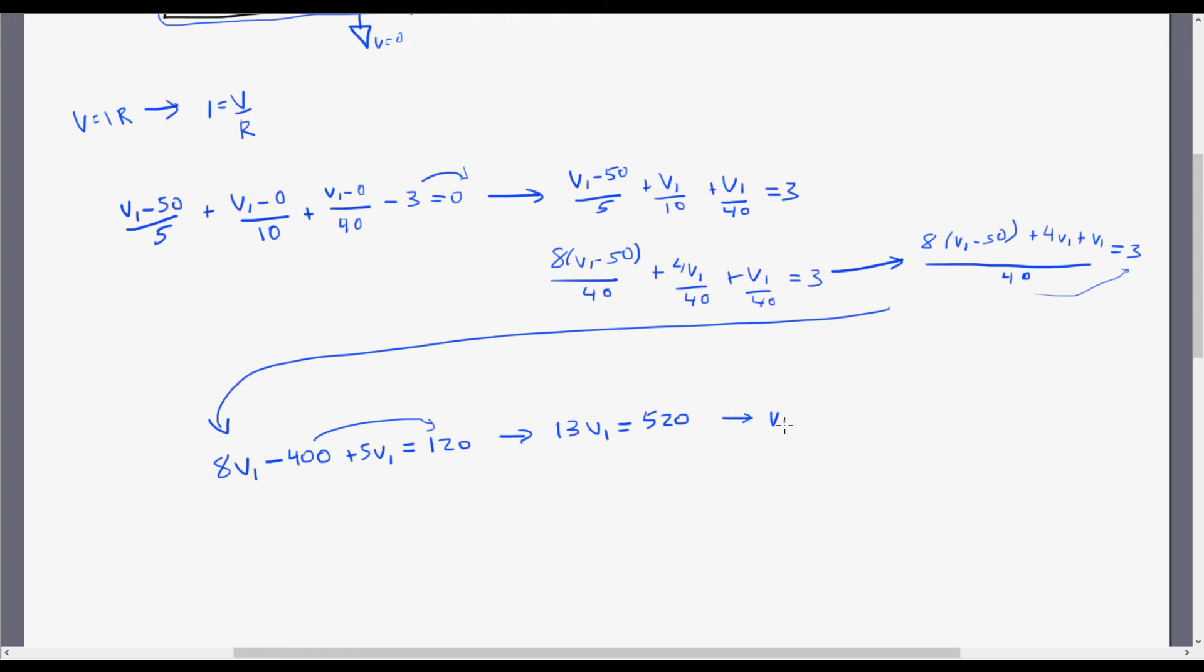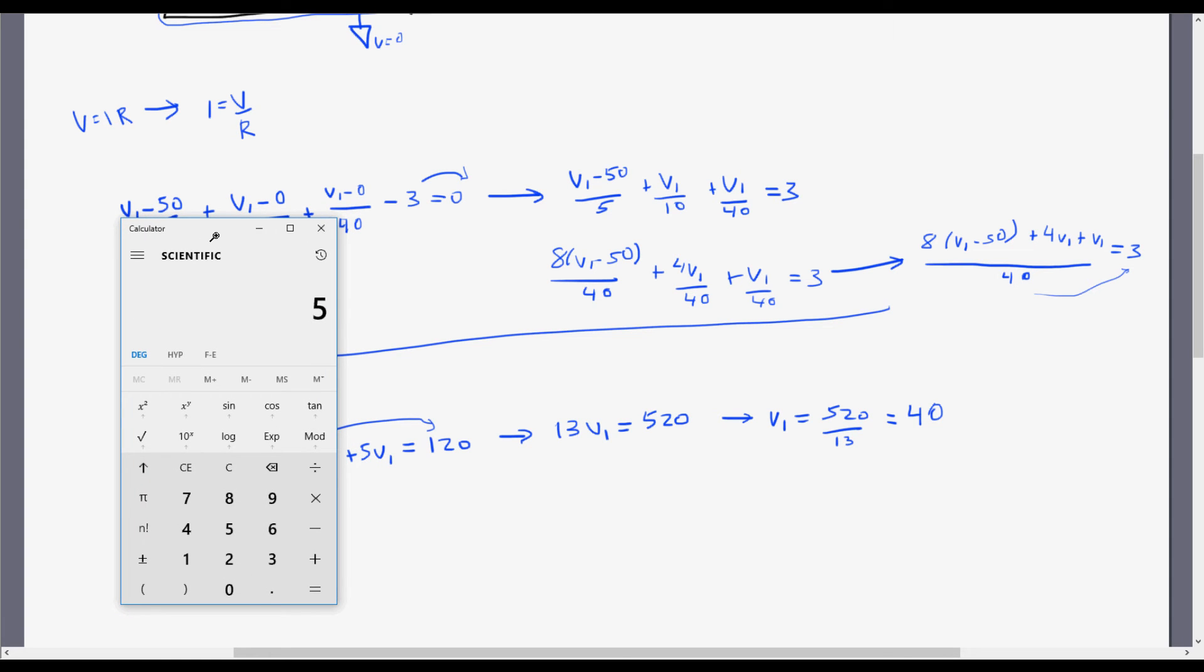V1 is equal to 520 divided by 13, which is also equal to 40, I believe. Just double checking my math here. 520 divided by 13 is 40. Awesome. So my answer for V1 is going to be 40 volts.